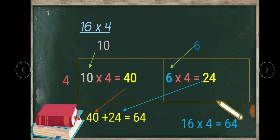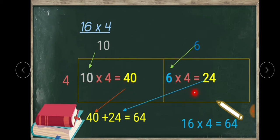This is the column of 10 and this is the column of 6. How did we get 10 and 6? As we learned in the previous example, we break the multiplicand — it has 2 digits — so we break 16 as 10 and 6. This is the column of 10 and the column of 6, and the row of 4. In the first box we write 10 into 4 — 10 fours are 40. In the column of 6, we write 6 into 4 — 6 fours are 24.